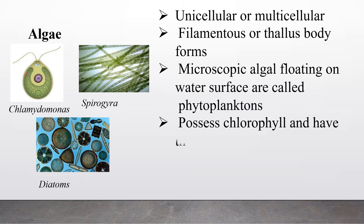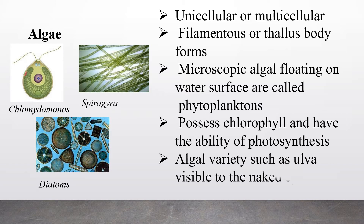Algae possess chlorophyll and have the ability of photosynthesis — they can produce their own food. Algal varieties such as ulva are visible to the naked eye, even though they are microorganisms.